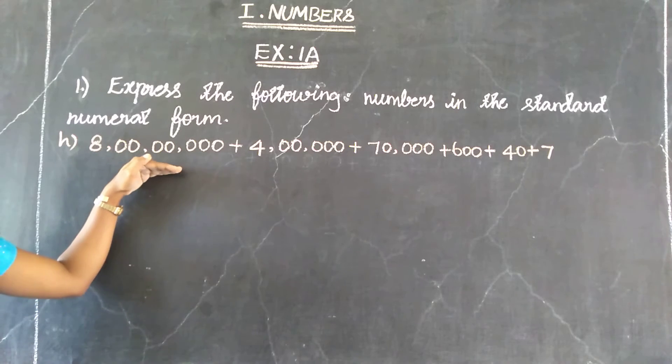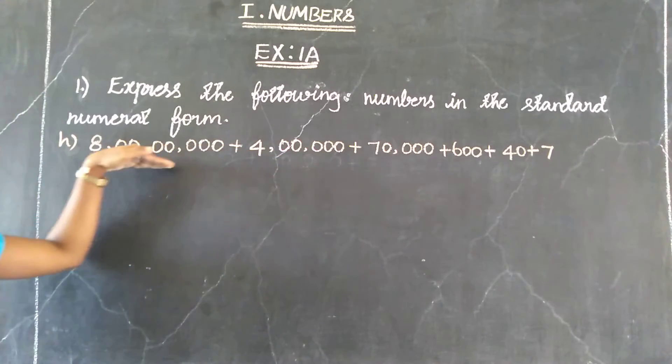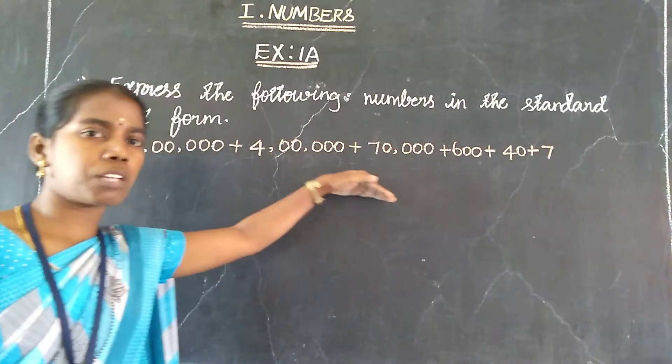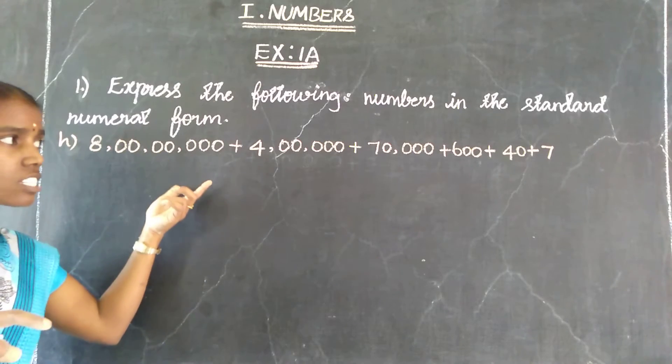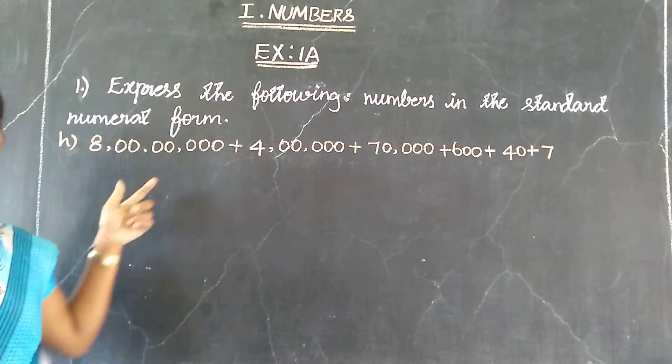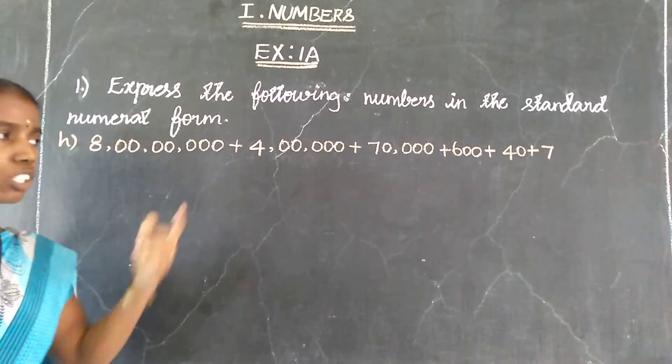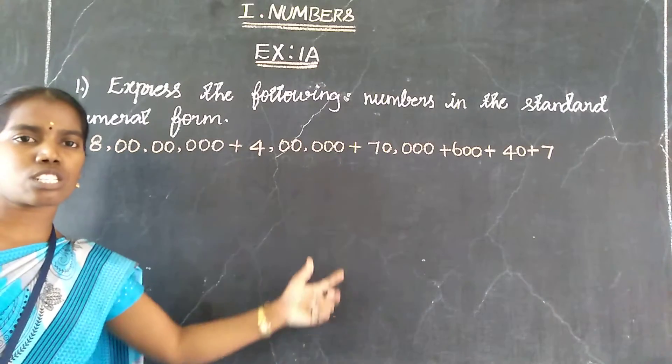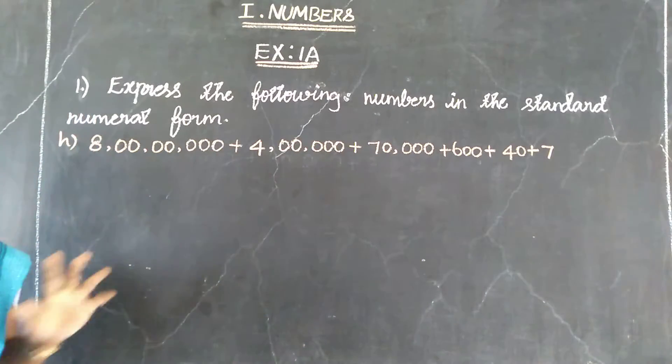First, the number is in expanded form. All values are in addition. We've split into ones, tens, hundreds, etc., in expanded form. So we need to transfer this expanded form to express it in standard numeral form. Standard numeral form is when you just add all these numbers together. The total value when you add these numbers equals the standard numeral form.